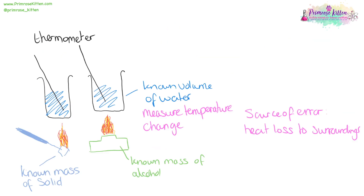Calorimetry is testing how much the temperature of water changes when we heat it with a known mass of a fuel. This can be done with solid fuel on a metal skewer, where you heat water and measure the temperature change, or it can be done with a liquid fuel such as alcohol in an alcohol burner. You can then measure the temperature change and work out the energy released. The biggest source of error is heat loss to the surroundings, because not all of the heat is going straight up into heating the water.